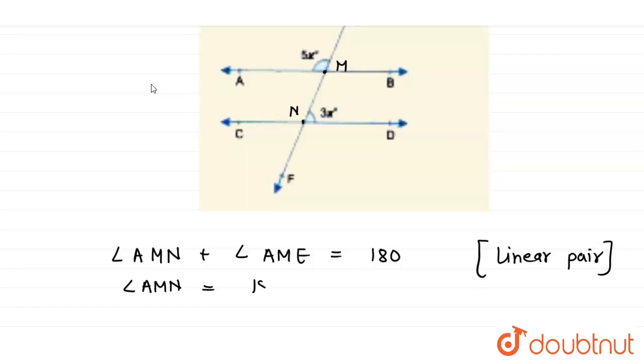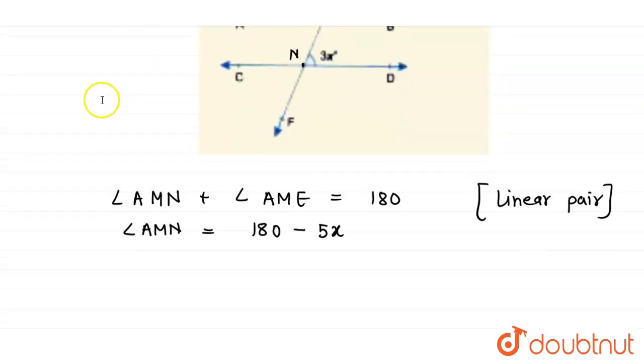And since we also know that angle AMN is equal to angle MND because they are alternate interior angles.